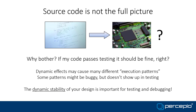You may ask: if my code passes testing, shouldn't everything be fine? It's not that easy, because dynamic effects may cause a whole range of different execution patterns. Many of these patterns are probably fine, but some might be buggy and may not even show up in testing. This is what I mean by execution patterns.